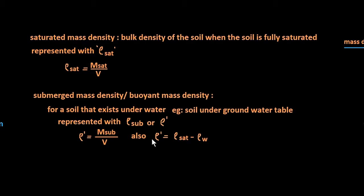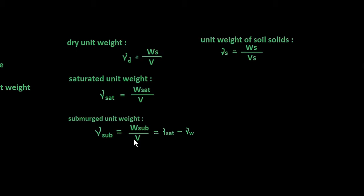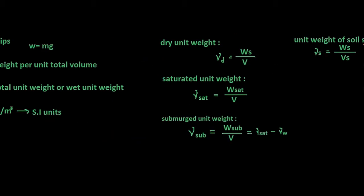γ_submerged, also called γ', equals γ_saturated minus γ_w. The last term, unit weight of solids, is represented with γs, which equals weight of solids divided by volume of solids — here the volume is volume of solids after drying. That completes both the volume-mass relationships and the volume-weight relationships.